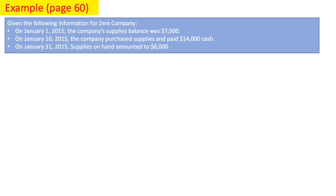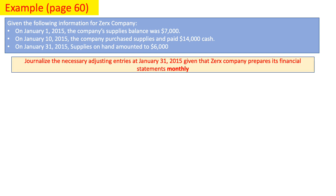Let's take another example from your books on page 60. Given the following information for the Ex-Company: on January 1, 2015, the company's supplies balance was $7,000; on January 10, 2015, the company purchased supplies and paid $14,000 cash; on January 31, 2015, supplies on hand amounted to $6,000. Journalize the necessary adjusting entries at January 31, 2015, given that the company prepares its financial statements monthly.